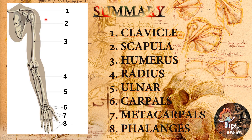Finally, let's review: here is the clavicle, here is the scapula bone, here is the humerus bone, here are the radius and ulna bones, here are the carpal bones, here are the metacarpal bones, and here are the phalanges bones.